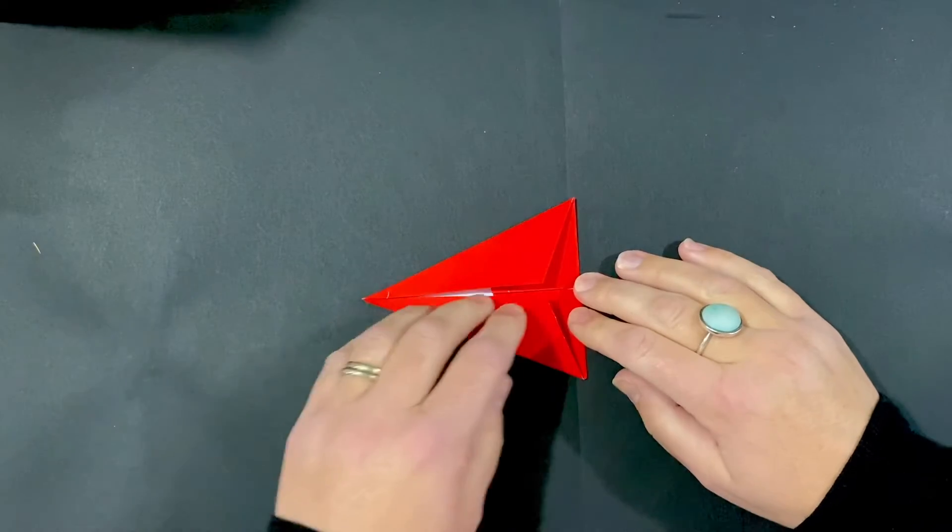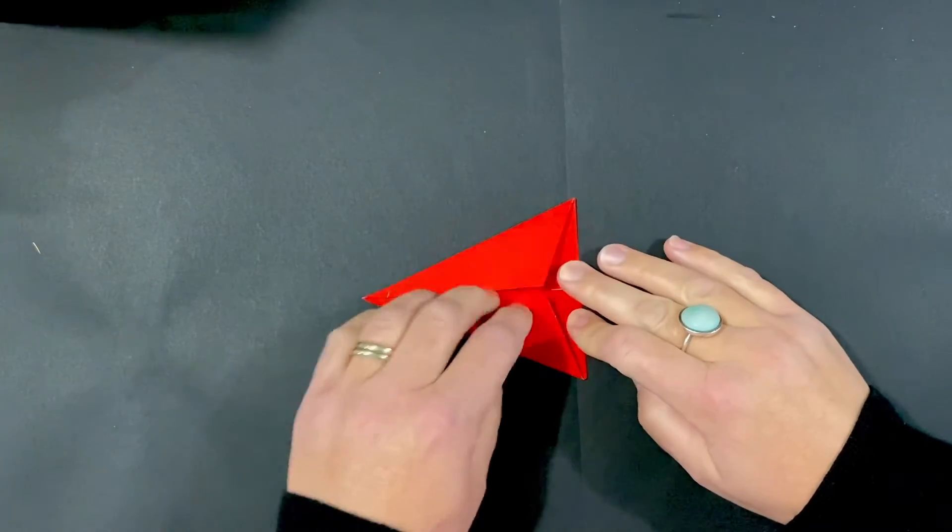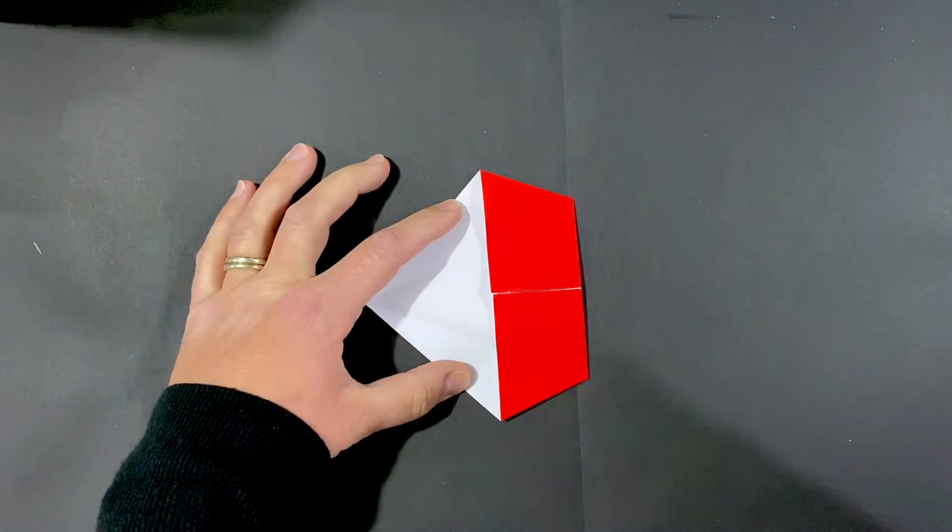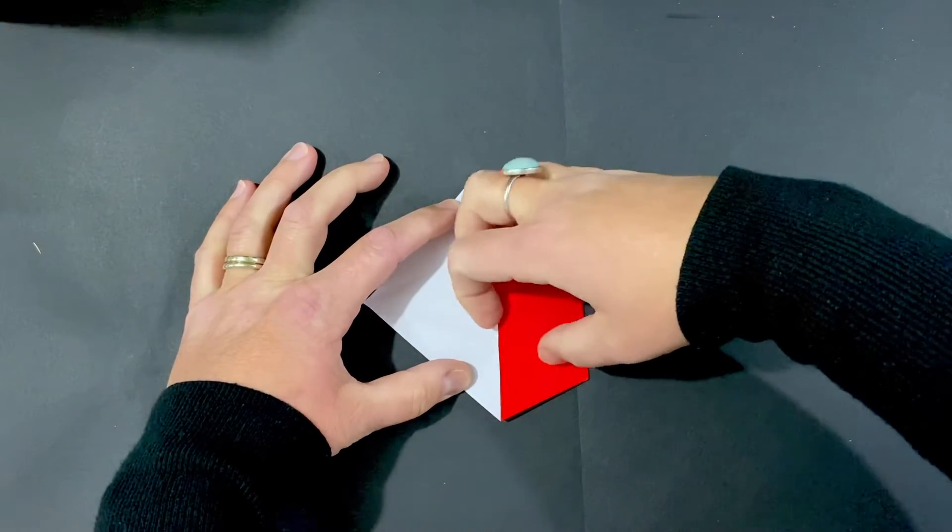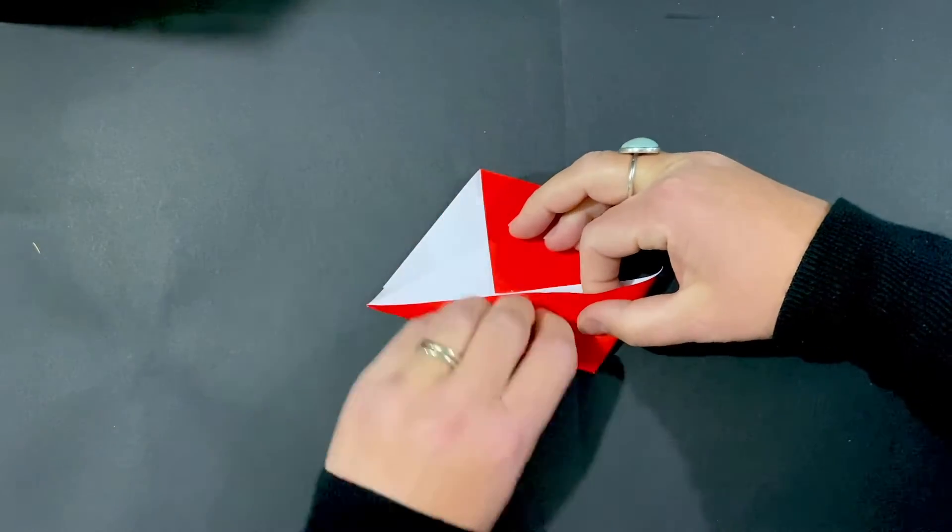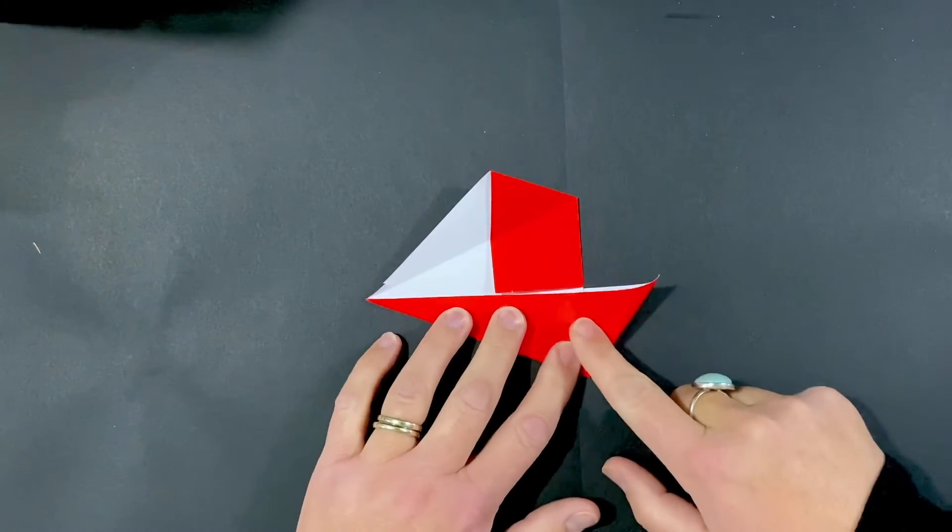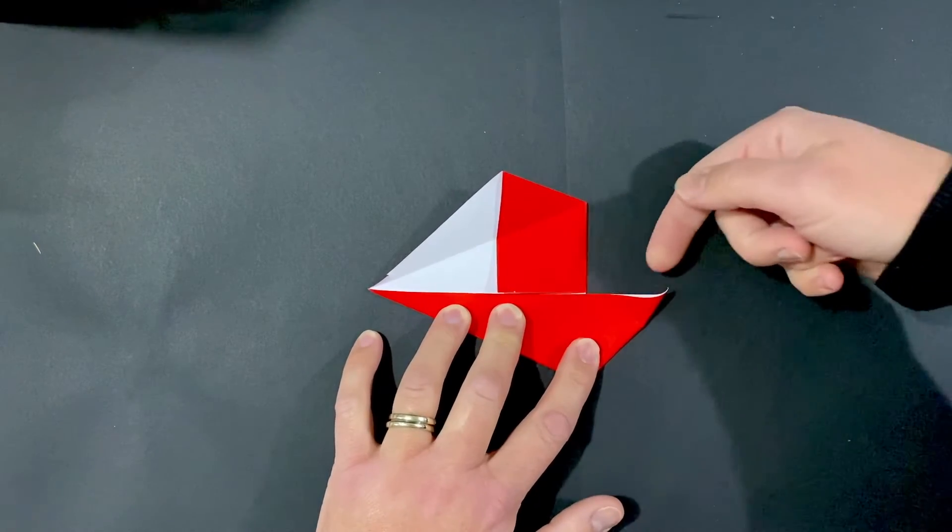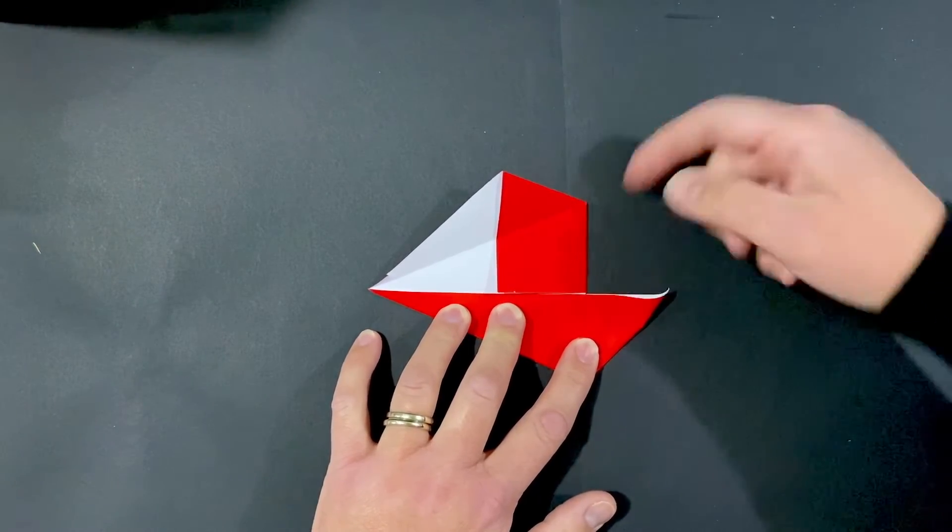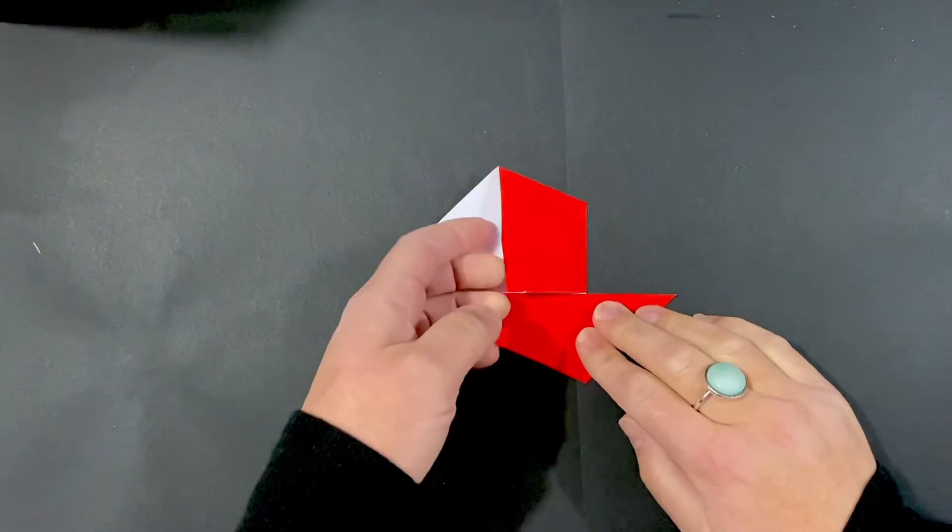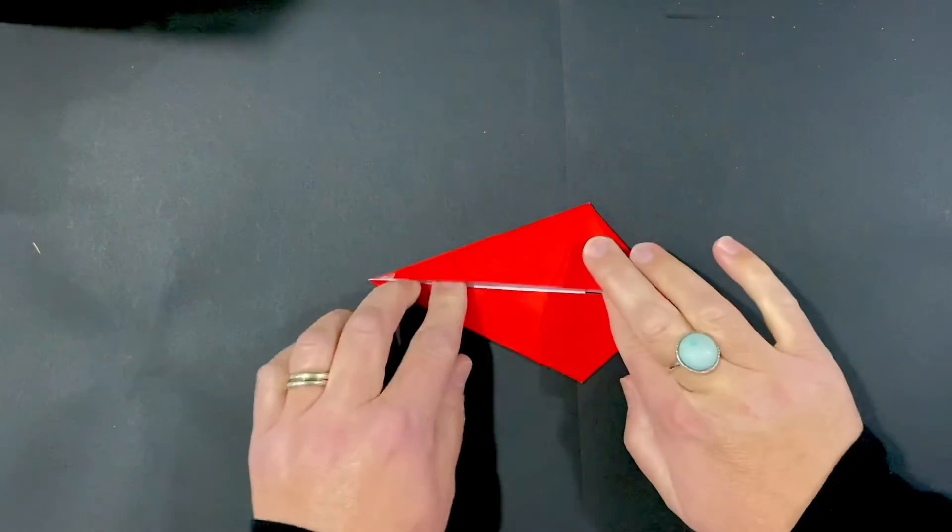Now we're going to unfold what we just folded so your paper looks like this. Next, we're going to unfold this lower section. Do it slowly, and what's going to happen is it's going to, because of the folds we made, push itself down. Then you just give it a little help in the end. I like to put my finger right here and help get that crease in. Then you're going to do the same thing on the other side.